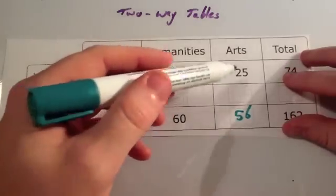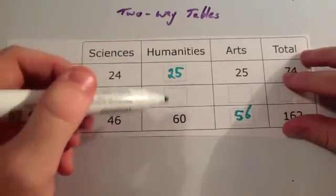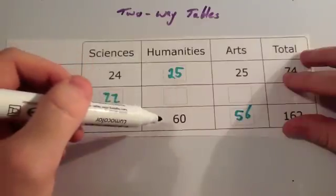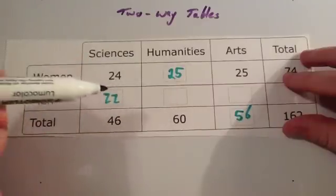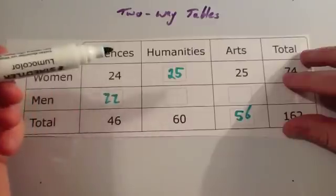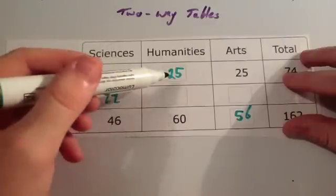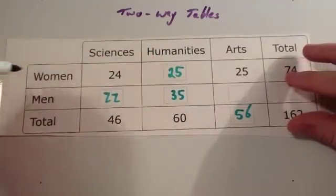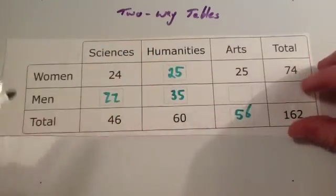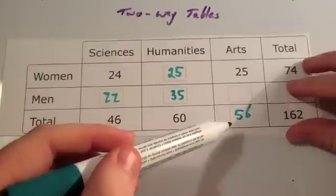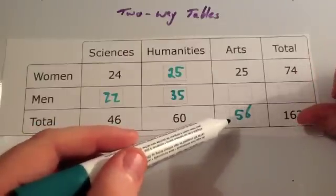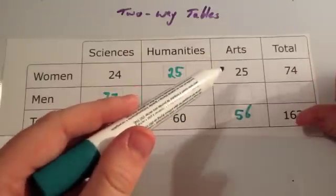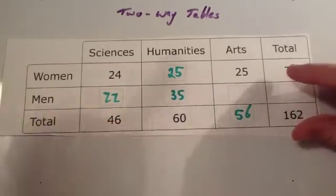Now let's work out these two remaining numbers. If you take the 25 women who do humanities away from the 60 that do humanities altogether, what's left will tell you how many men do humanities. 60 take away 25 is 35. Now let's work out how many men do arts. 56 people do art altogether and 25 are women, so if you take 25 away from 56, you get 31.